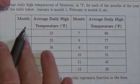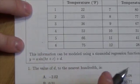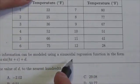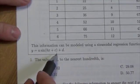So here's our data. I'll come back to this in just a second. The question says here that this information can be modeled using a sinusoidal regression function in the form, and then we're given the formula right here, y equals a sine of bx plus c plus d.